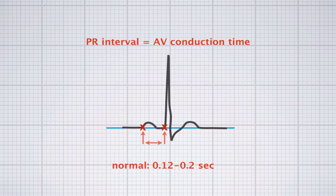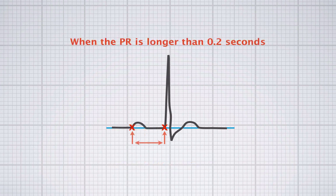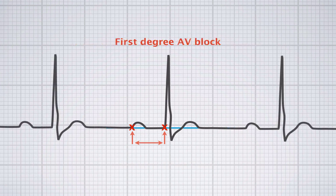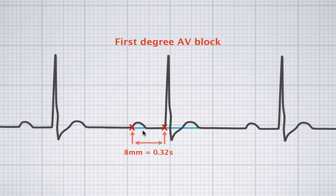Let's look at some situations when the PR interval is considered abnormal. First, let's look at a situation when the PR interval is longer than 0.2 seconds. As you can see, the PR interval is almost 8 millimeters long. We know that 1 millimeter stands for 0.04 seconds, and 0.04 times 8 is 0.32 seconds — that's way over 0.2 seconds. In this special case, there is a constant prolongation of the PR interval, and this is an example of a first-degree AV block. You're going to learn much more about this entity in later chapters.